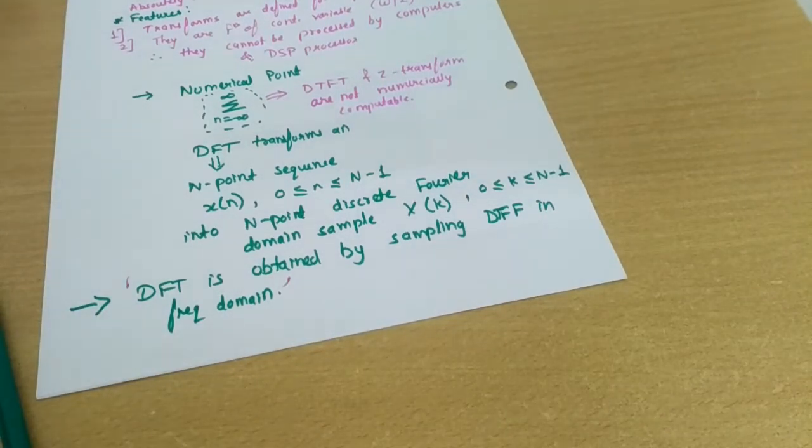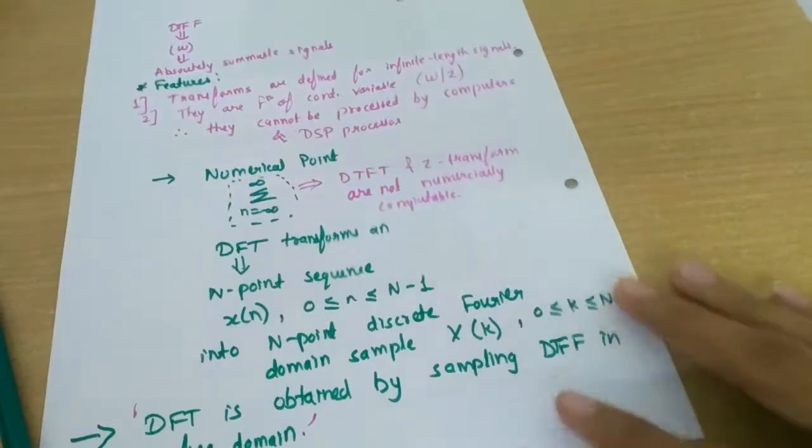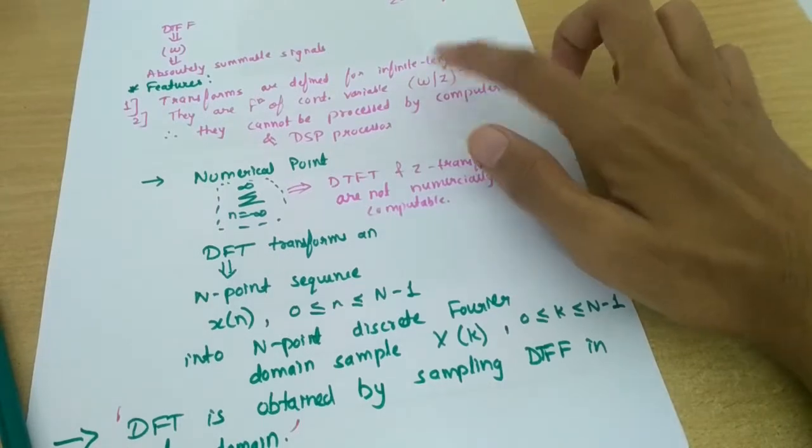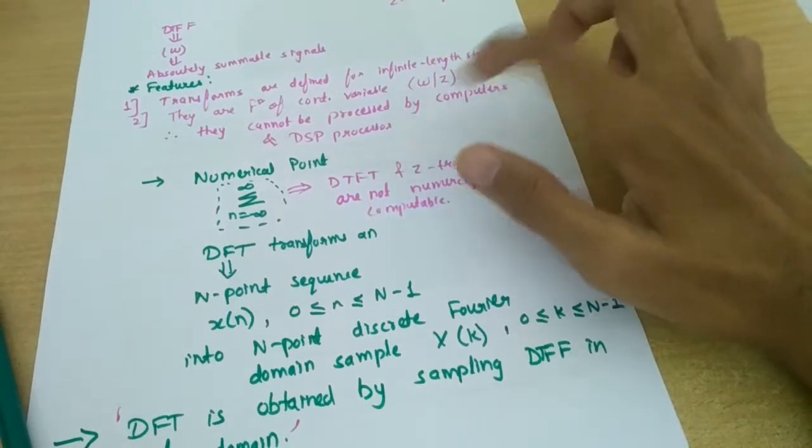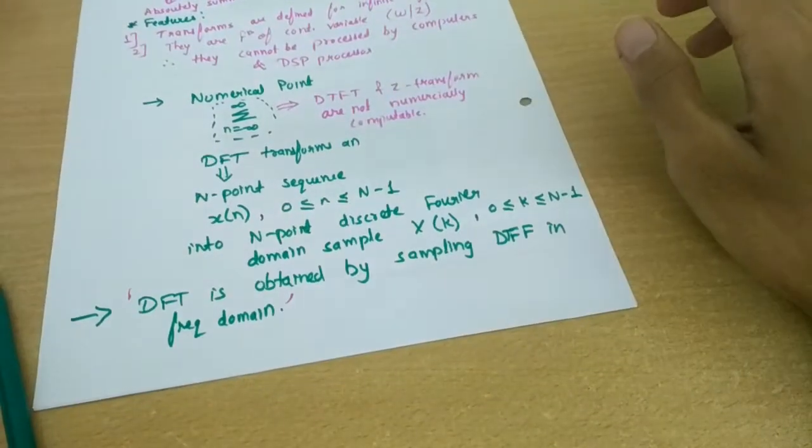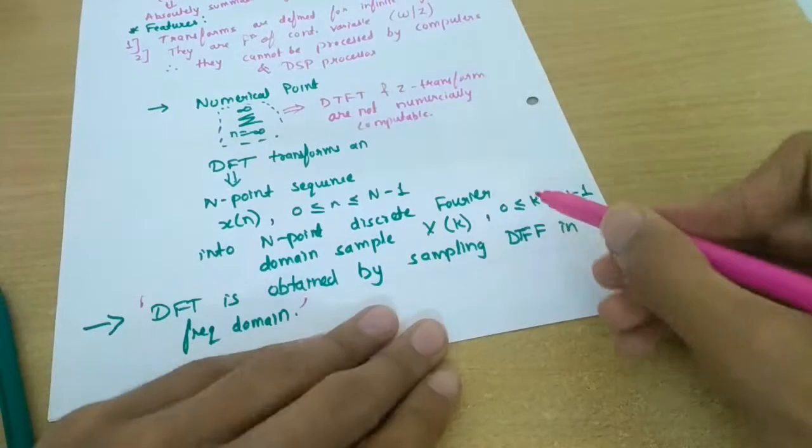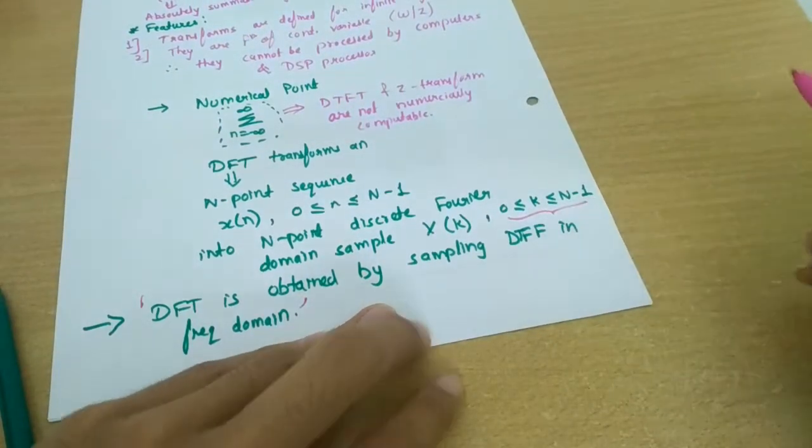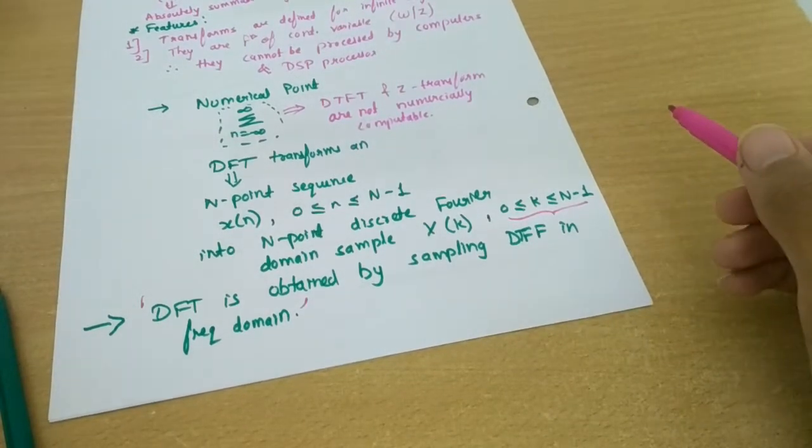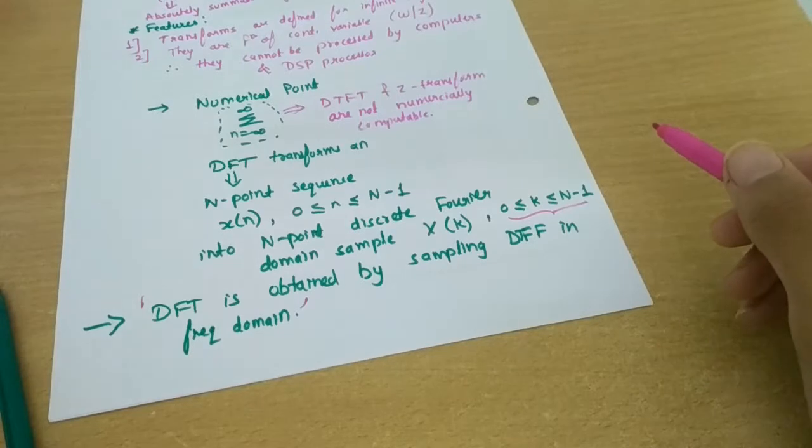Okay, so another point is that the DFT is itself a sequence rather than a function of a continuous variable, and this was the drawback - that both of them are the function of continuous variable, that is omega or Z, and this is the reason why they cannot be processed by computers. And the same drawback is being solved over here by DFT, and it is that this is also an n-point sequence only.